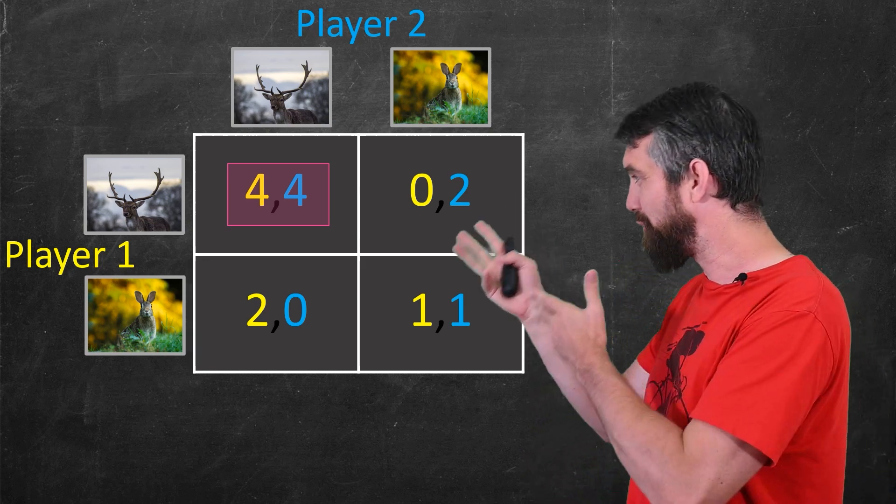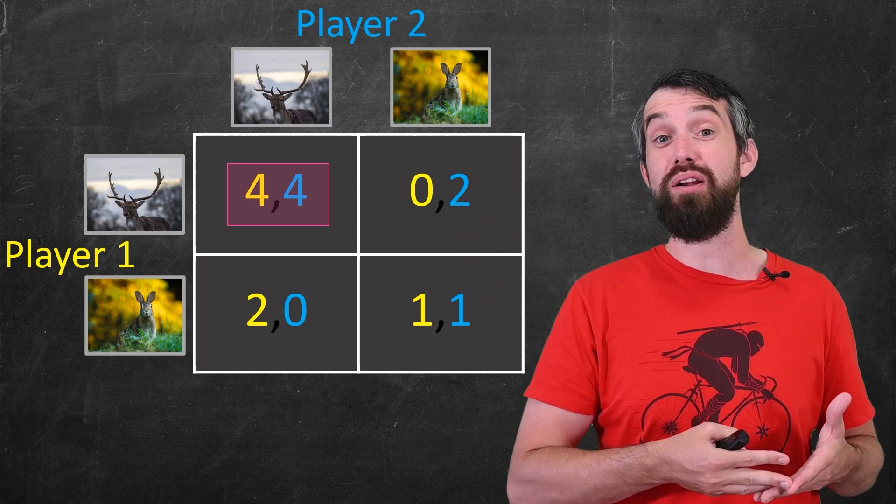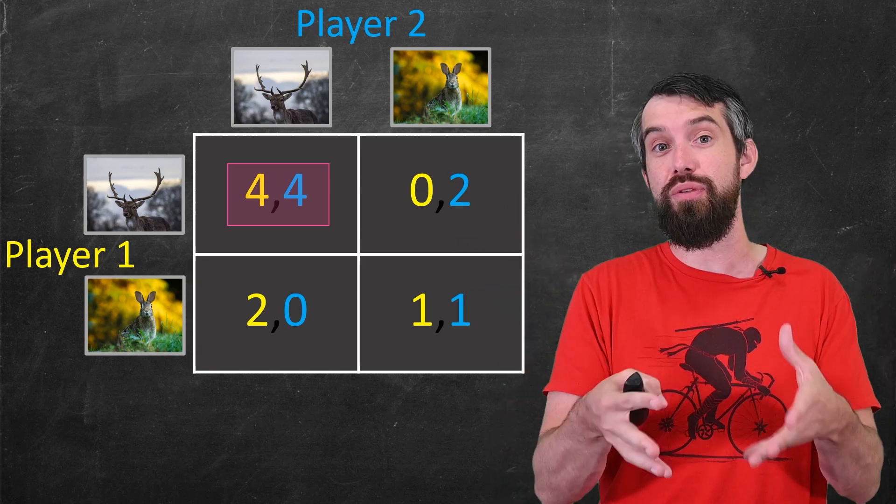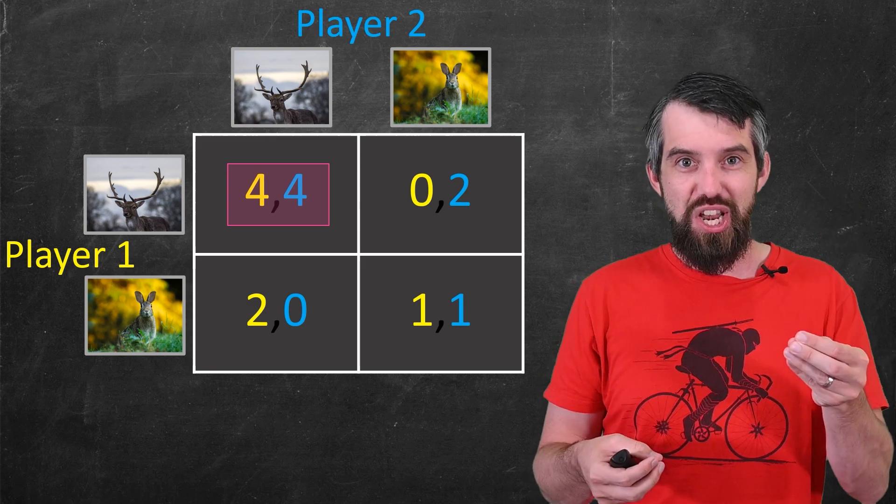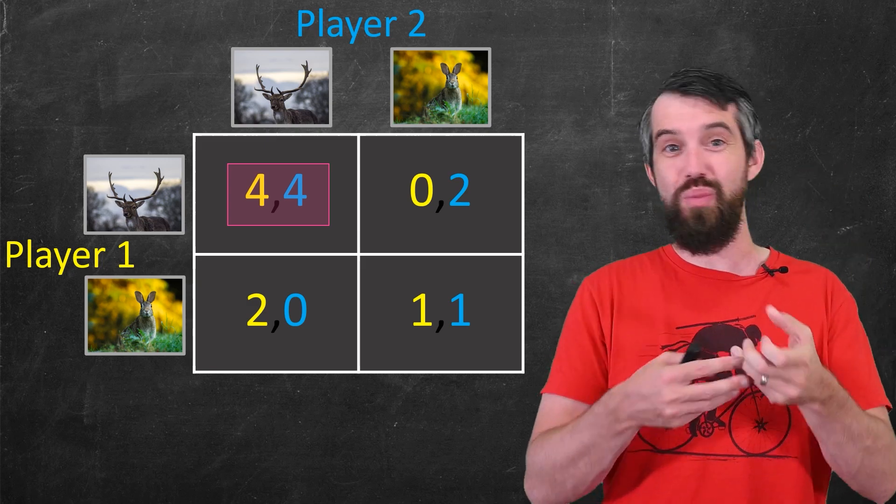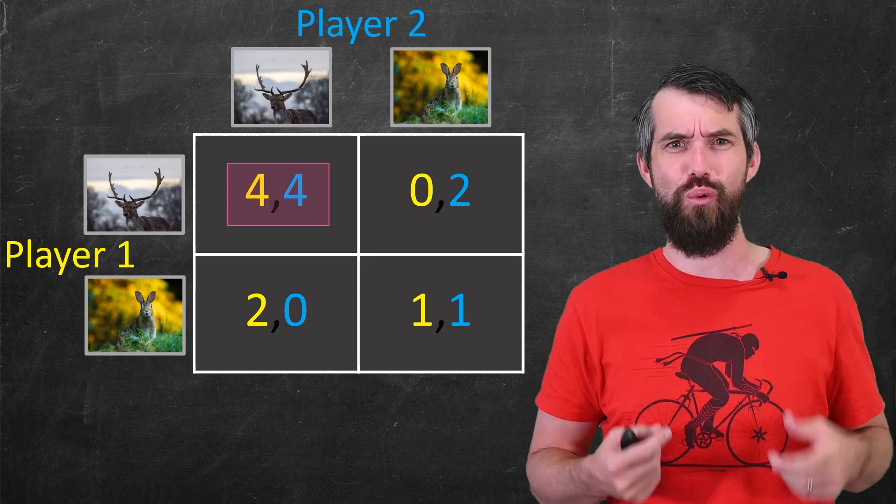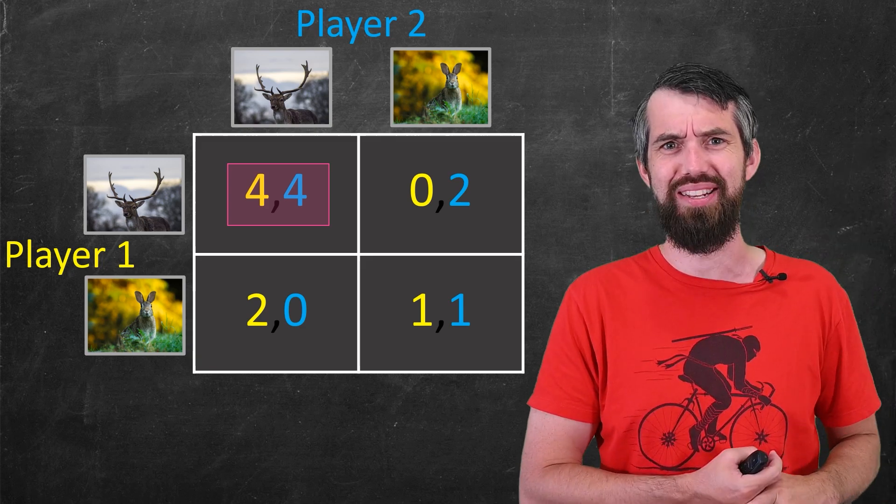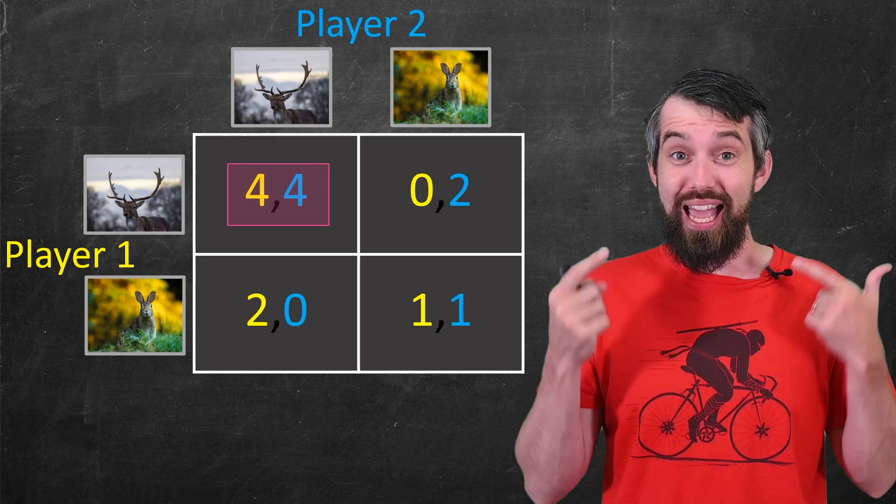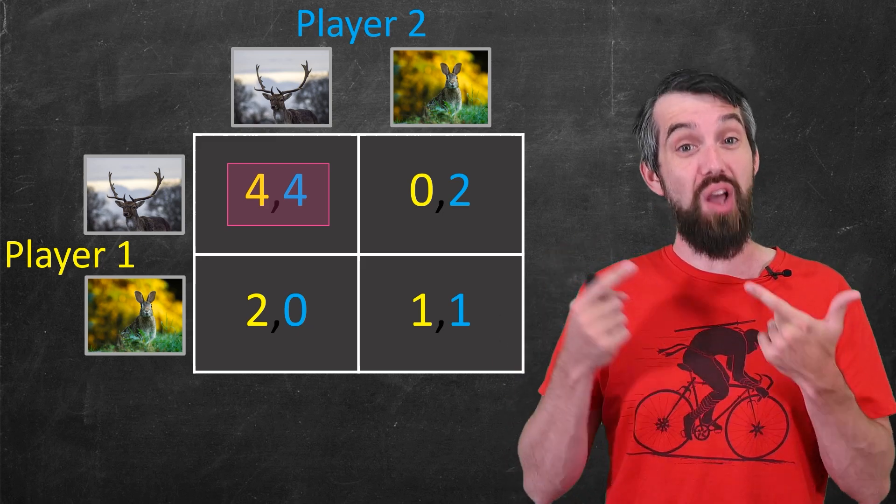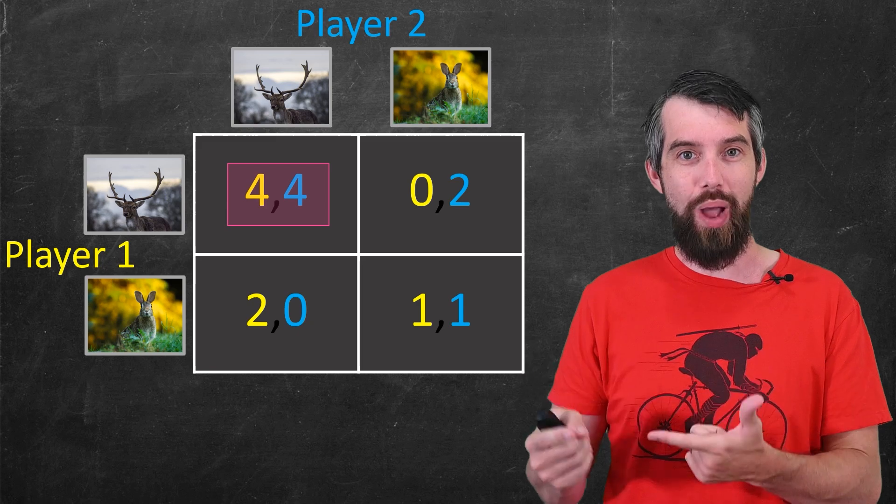So what do these numbers mean? Well, for example, if I look at this 4-4, that's where both players are going to cooperate and hunt together the stag. The first number refers to player 1, how much payoff they get. So they're going to get 4 units of meat. And then the second number, the second 4, refers to the second player. They also get a payoff of 4 as well.